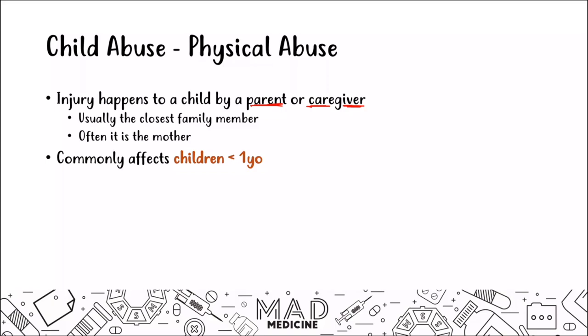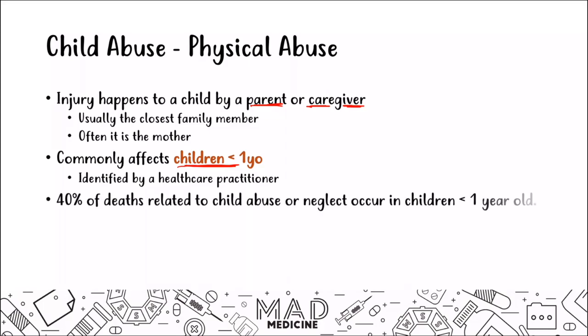Physical abuse is usually caused by someone really close who is often exhausted from caring for the child, and it is frequently identified by healthcare practitioners. Forty percent of deaths related to child abuse and neglect occur in children who are less than one year old — a very high number.